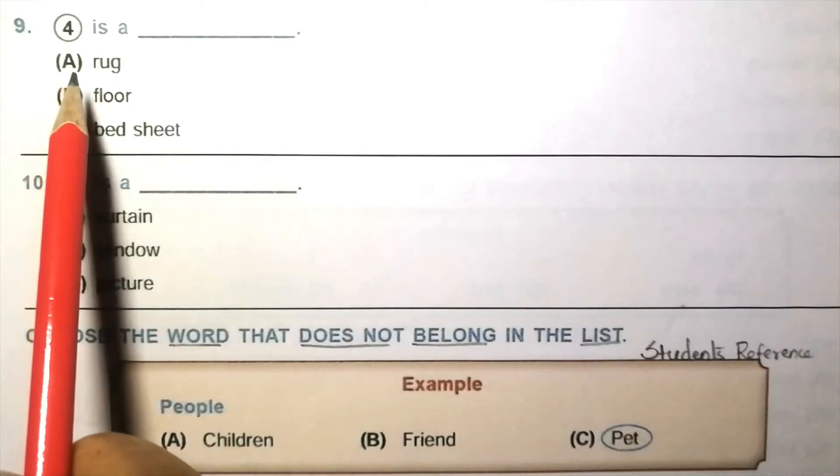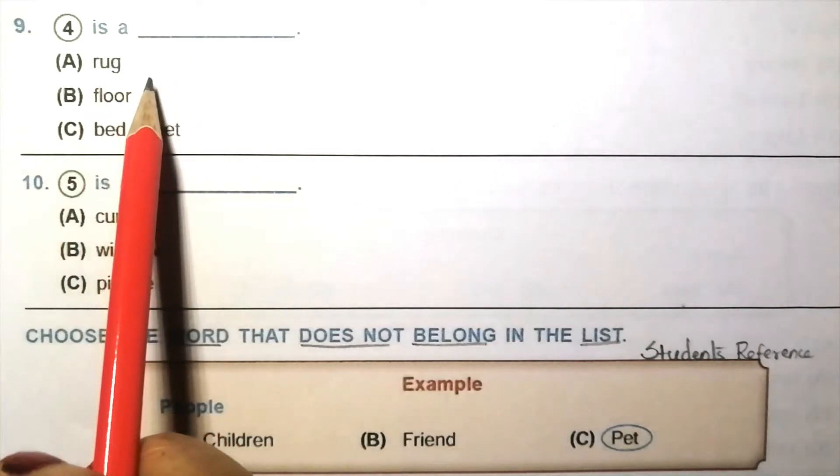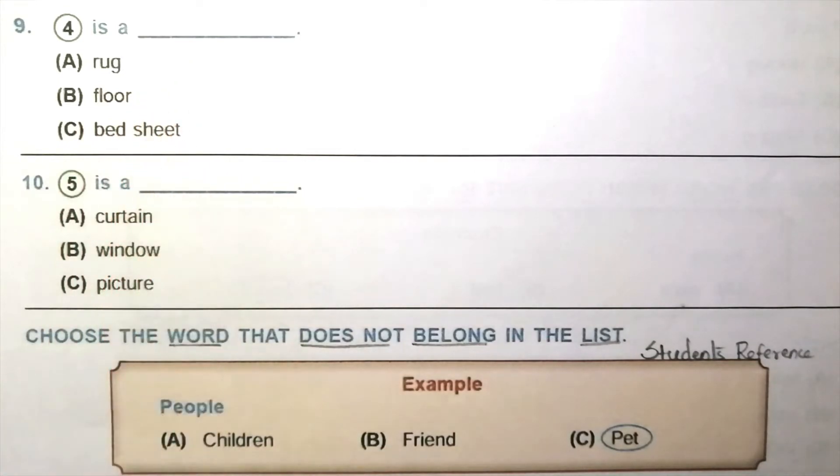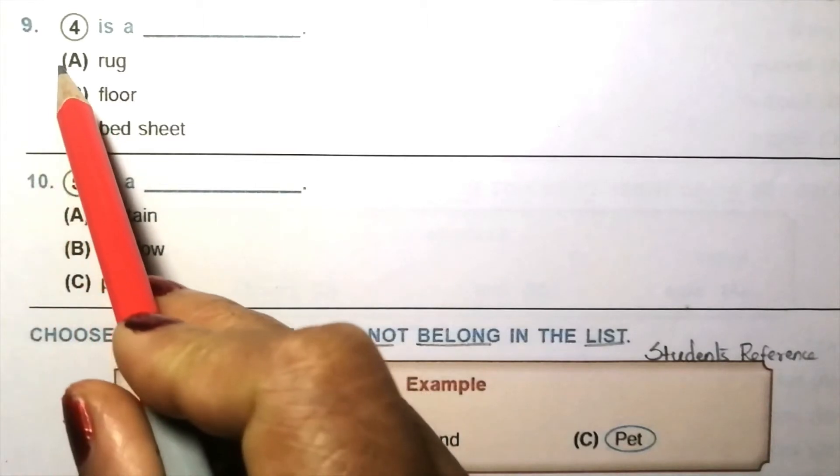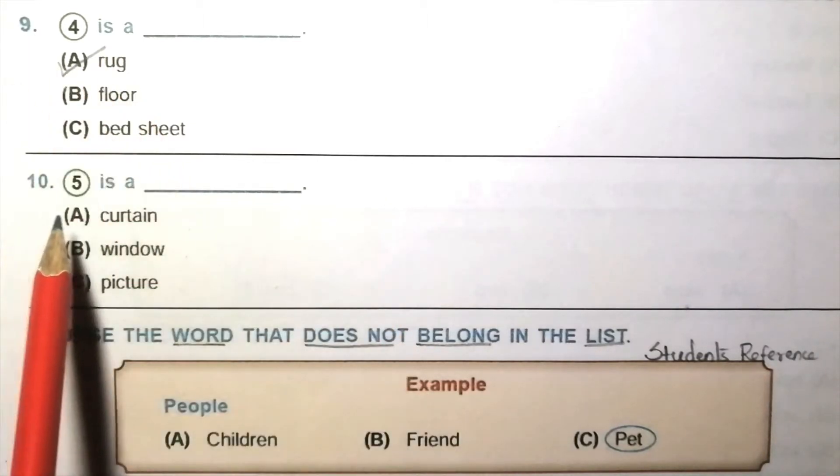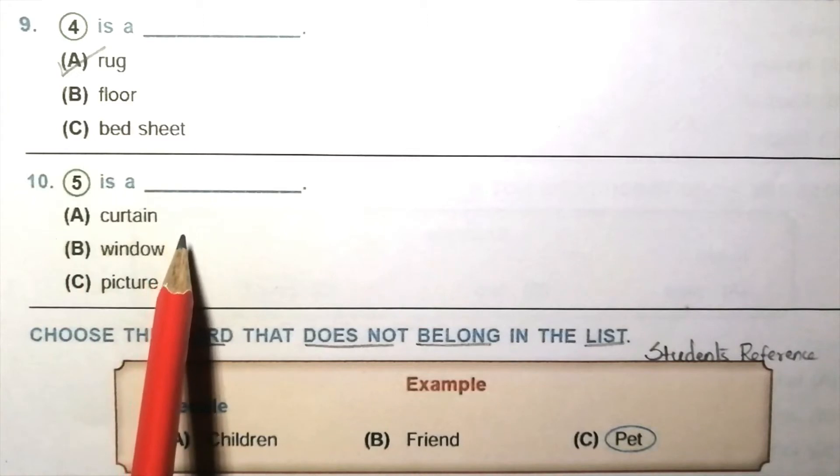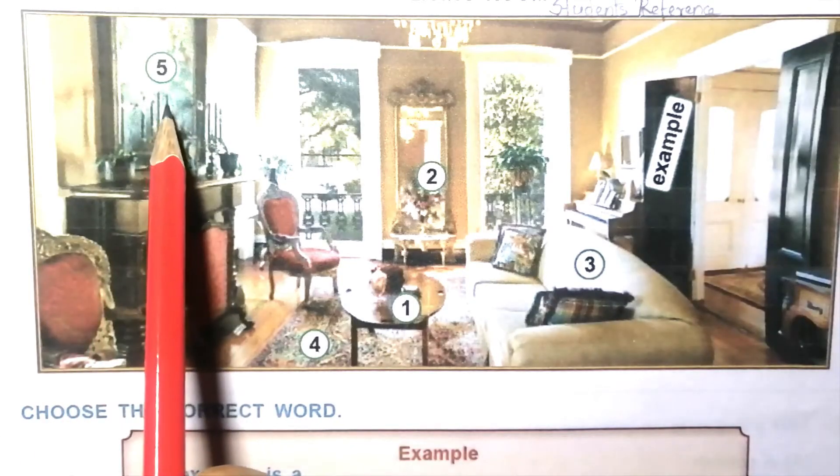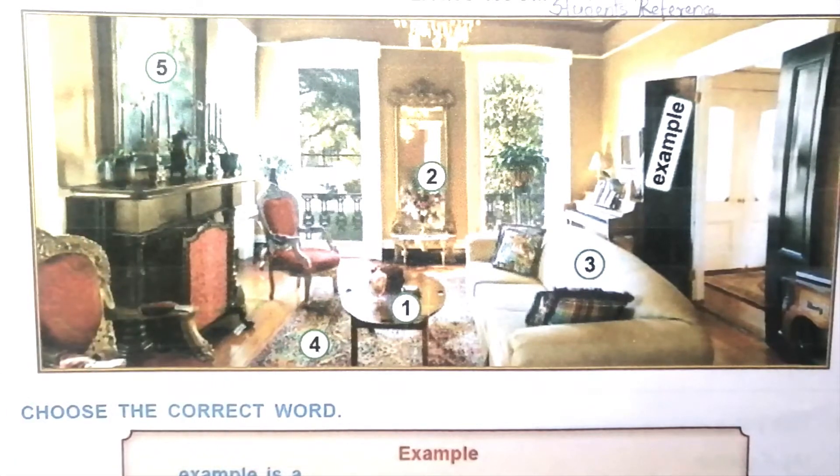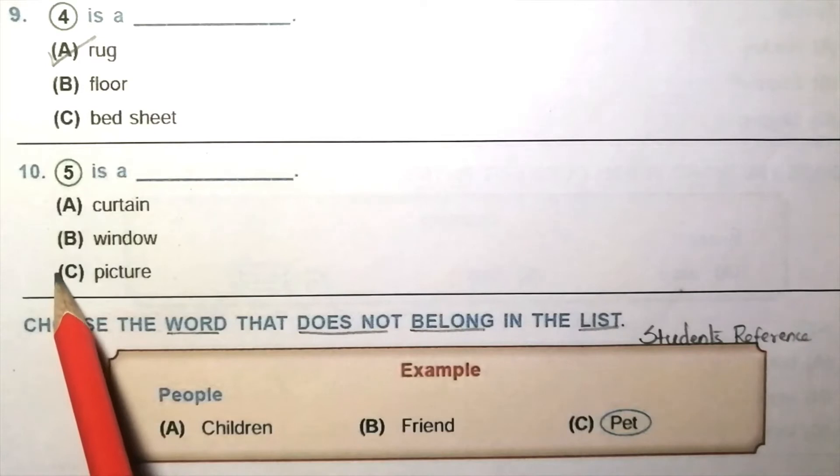Question 9: Four is blank. Rug, floor, bed sheet. The given picture four is a rug. So the answer is A, rug. Question 10: Five is blank. Curtain, window, picture. The given picture five is a picture. So the answer is C, picture.